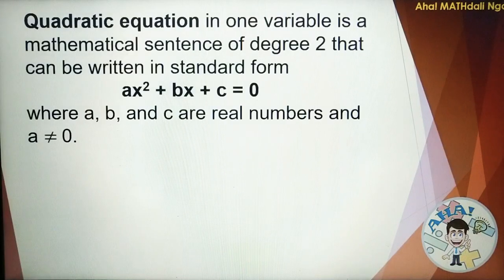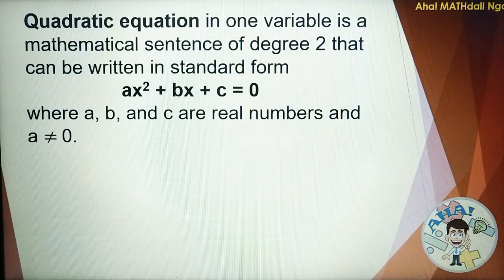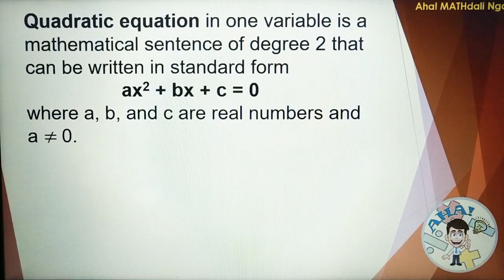What is a quadratic equation? A quadratic equation in one variable is a mathematical sentence of degree 2 that can be written in standard form AX squared plus BX plus C is equal to 0, where A, B, and C are real numbers and A should not be equal to 0.